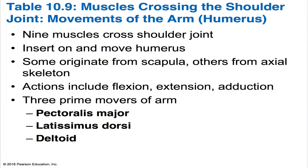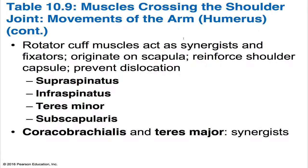We're going to be looking at the muscles crossing the shoulder joint, which are responsible for the movements of your arm — that's the humerus bone. The shoulder joint is a ball and socket joint and the most flexible joint in our body, but because of that, it's highly unstable. Several muscles cross the shoulder joint to insert onto the humerus. Of the nine muscles crossing the shoulder joint, only the pectoralis major, latissimus dorsi, and deltoid are prime movers. The remaining muscles are synergists and fixators.